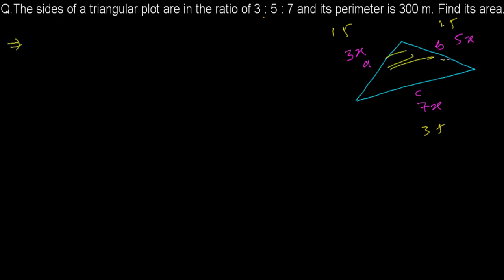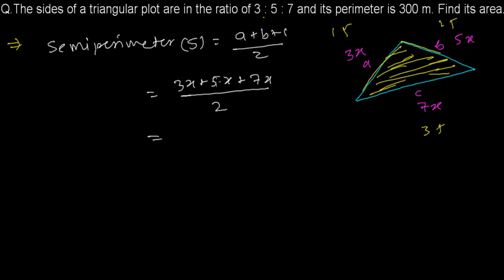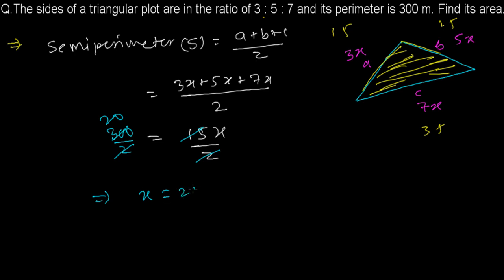We need to find the area and we know only the three sides, so we have to apply Heron's formula. First we need the semi-perimeter s, which is the sum of all sides divided by 2: (3x + 5x + 7x) / 2 = 15x / 2. The perimeter is 300m, so the semi-perimeter is 300/2 = 150. Setting 15x/2 = 150 gives x = 20 meters.